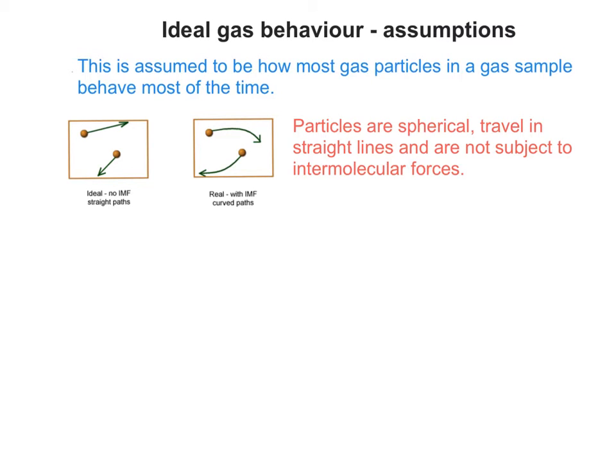For instance, we assume that particles are spherical, they travel in straight lines and are not subject to intermolecular forces. You can see in the two pictures that there's actually an acceptance that gas particles behave differently to the ideal gas behaviour model, but our calculations are based on the ideal model to keep things simple and workable.